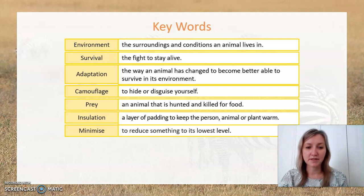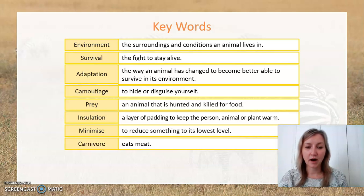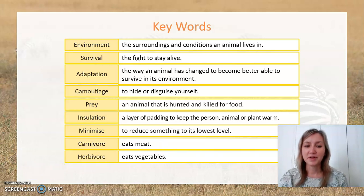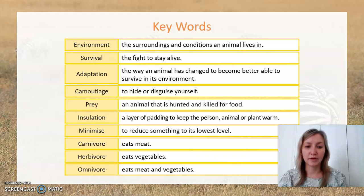To minimise is to reduce something to its lowest level. A carnivore is an animal that eats meat. A herbivore is an animal which eats vegetables only, not meat at all. And an omnivore eats both meat and vegetables.